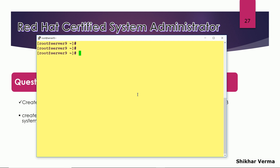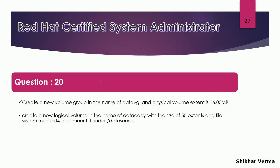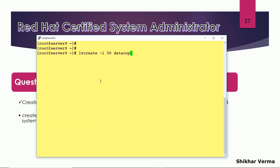The second part is creating a logical volume named data copy. I will use lvcreate with the option -l (lowercase L) for extents — giving 50 means 50 extents. Using capital -L would let you specify size in MB or GB instead. One extent size is 16 MB. The name option -n is used for the logical volume name: data copy, and the VG name is data VG.